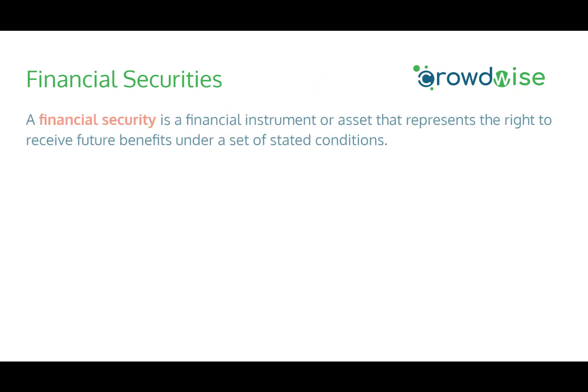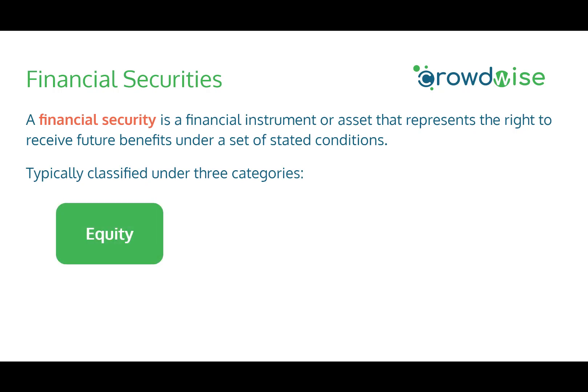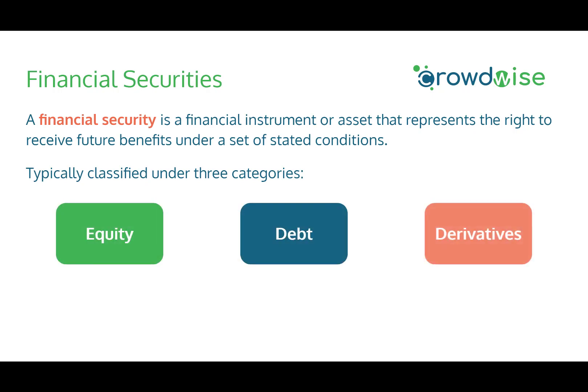When you see the word financial securities, do you know what that means? Essentially, a financial security is just a financial instrument or an asset that represents the right to receive future benefits under a set of stated conditions. Typically, we can classify financial securities in three high-level categories: equity, debt, and derivatives. In addition, there are obviously different hybrid combinations of these, such as convertible bonds, which are a combination of debt that pays interest, but also a convertible option that converts to equity.